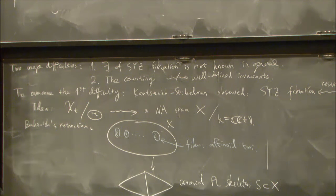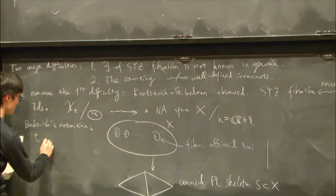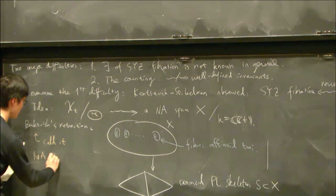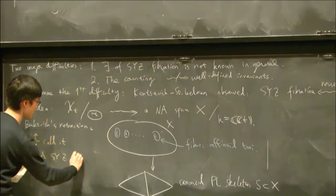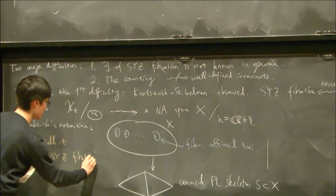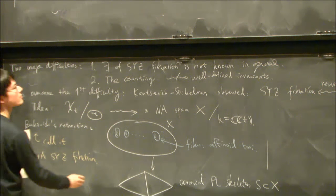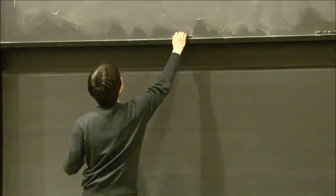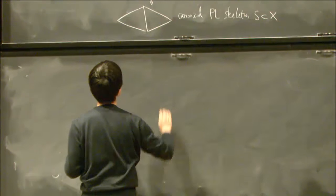For this reason, we call Berkovich's retraction for this X the non-Archimedean SYZ fibration.